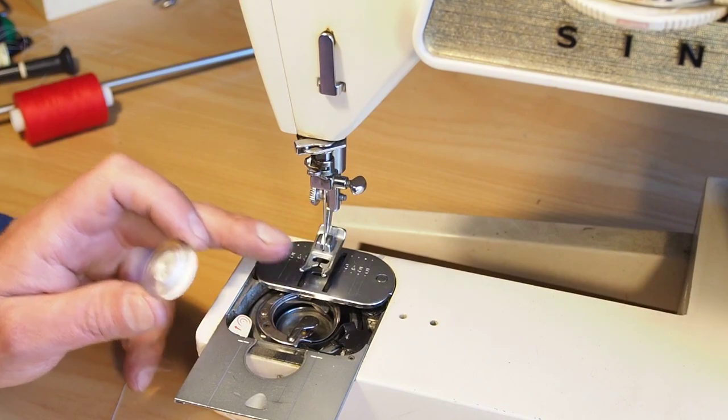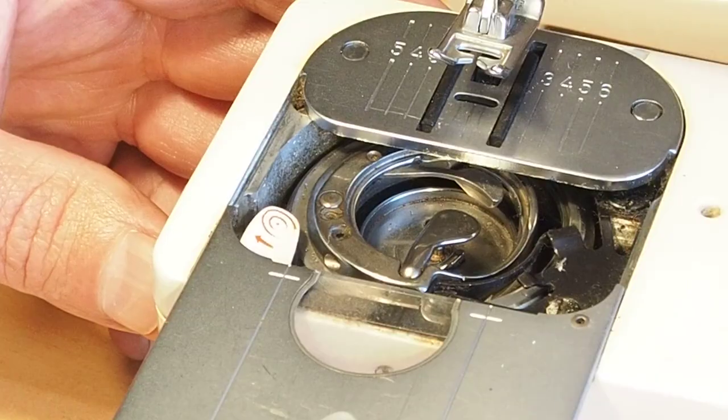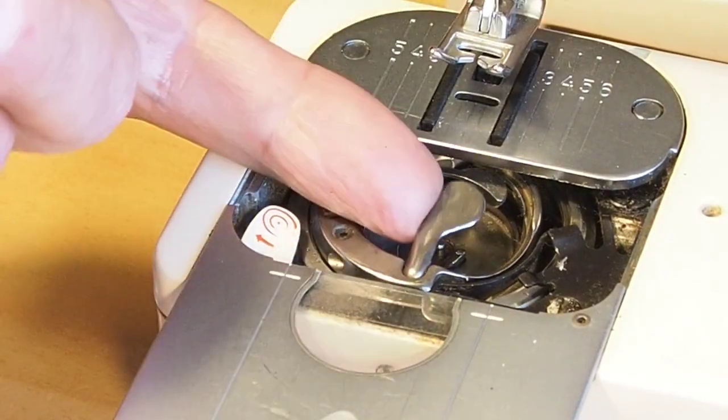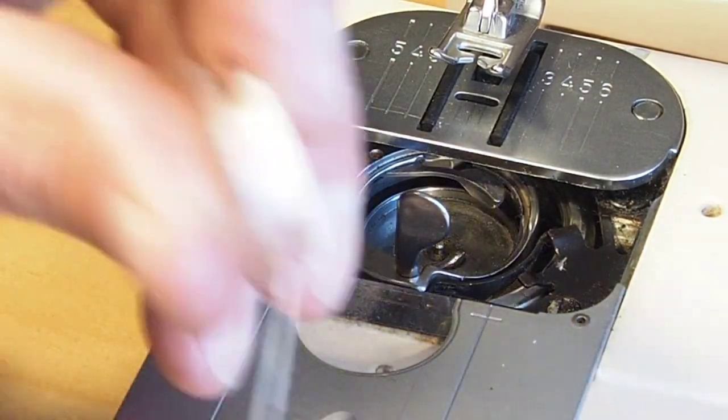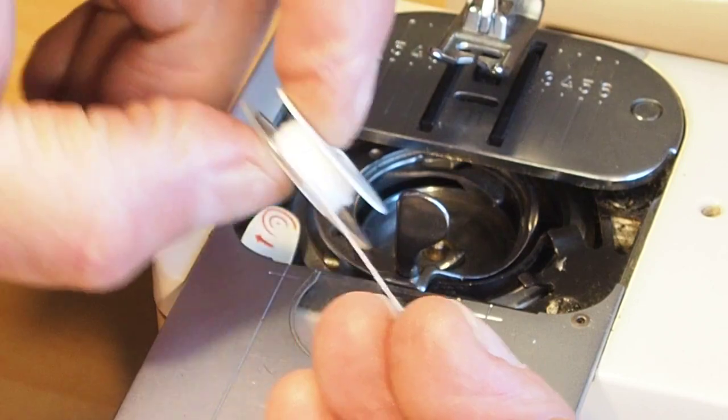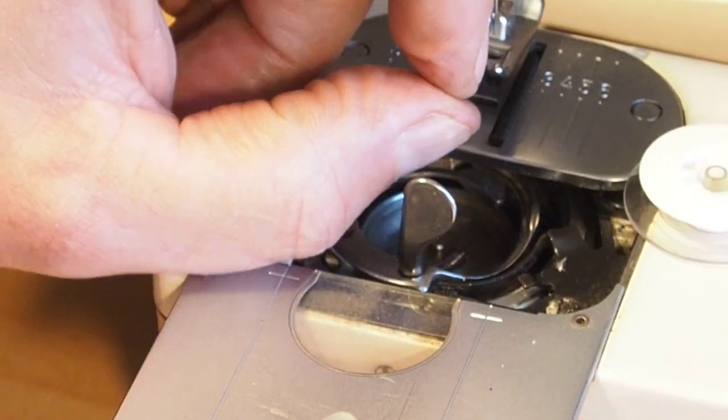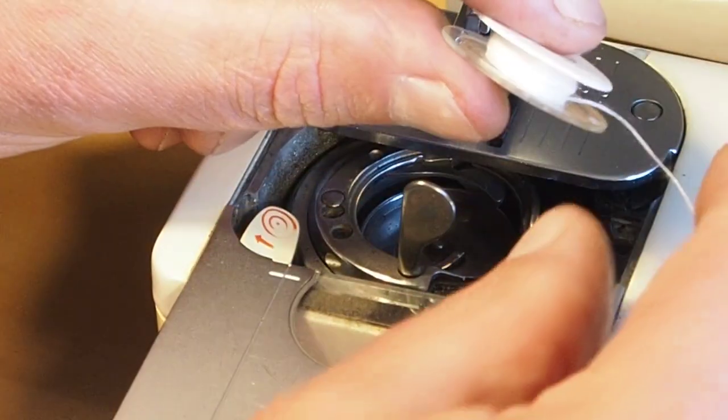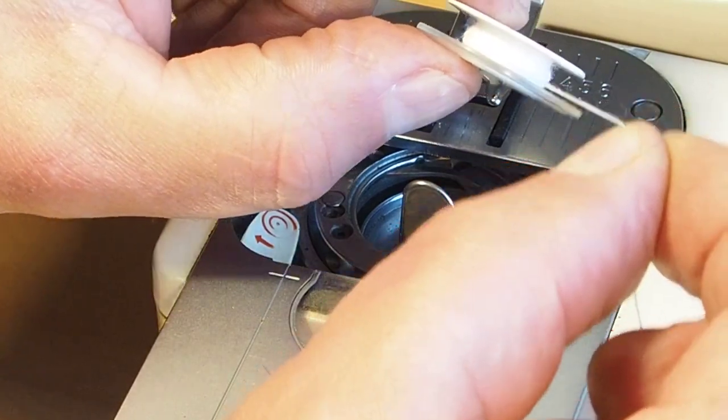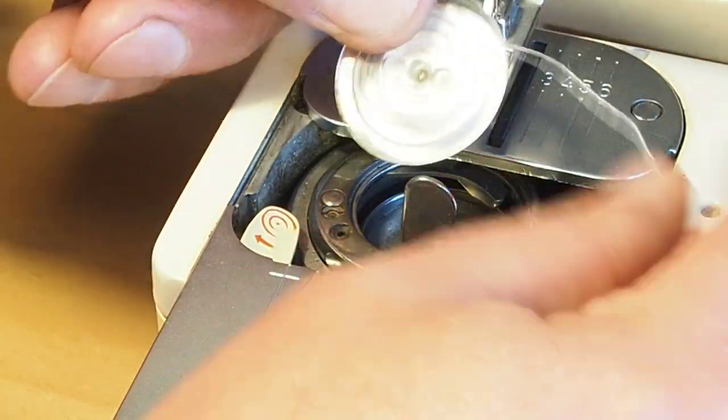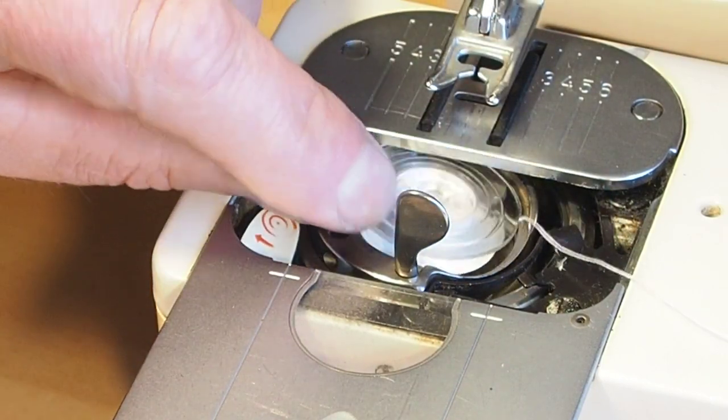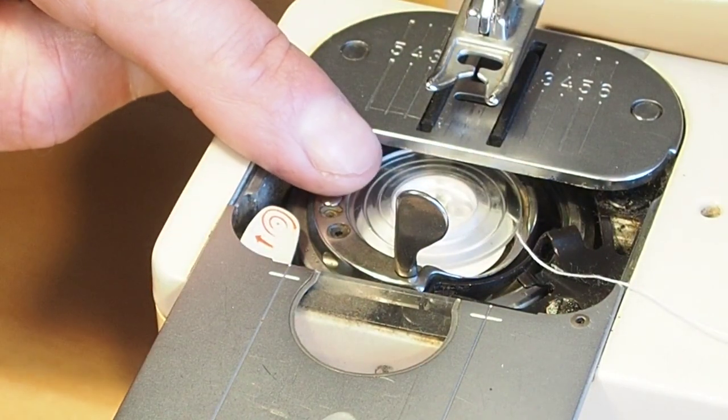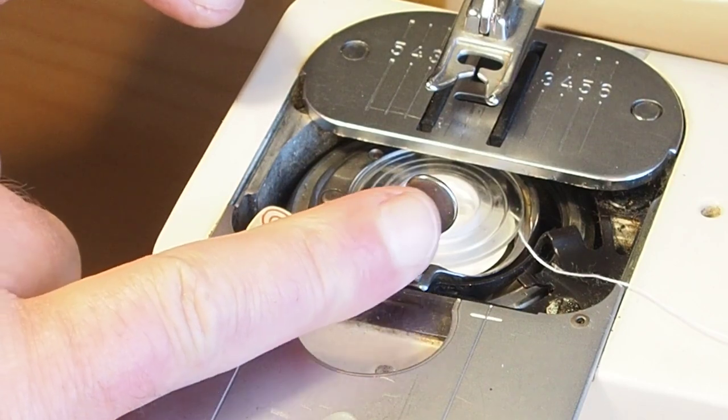I'll just bring the needle out of the plate there. So what you do is flip back the little retaining lever, and you've got your pre-wound bobbin. Maybe you're just changing color and you want to put a white bobbin in. Just drop the bobbin straight into the bobbin area there, flip down the latch.